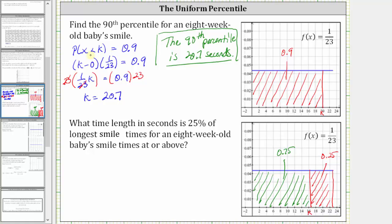We can set this up two ways: using the greater-than inequality and setting it equal to the area of the red rectangle, or using the less-than inequality and setting the probability equal to the area of the green rectangle. It is easier to use the green rectangle because the length of the base is simply k units. If we use the red rectangle, the base equals 23 minus k. We will show both setups but solve using the green rectangle.